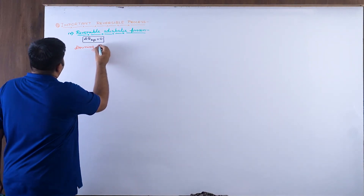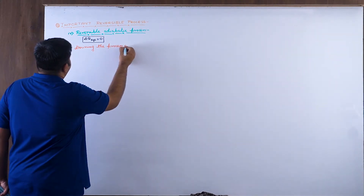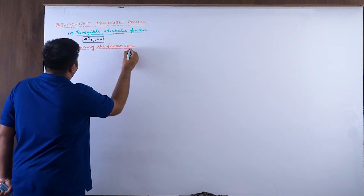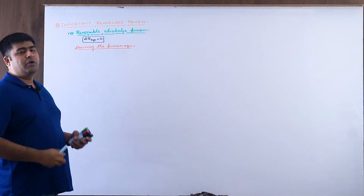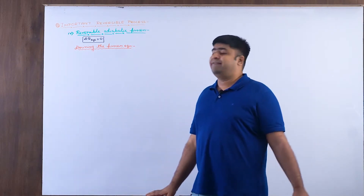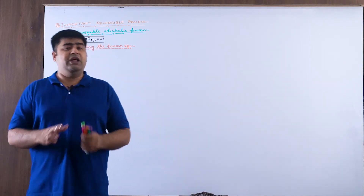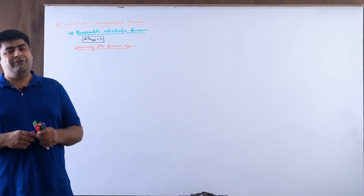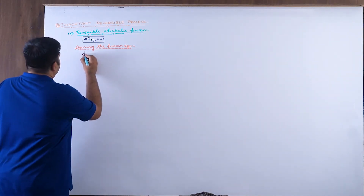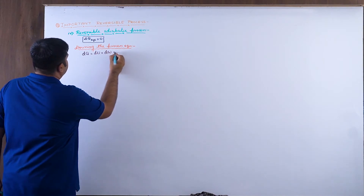So our first challenge is deriving the process equation. Without that, we can't say anything — we can't draw graphs or do anything else. So we must definitely derive the process equation first. Starting with: dQ = dU + dW, which equals zero.